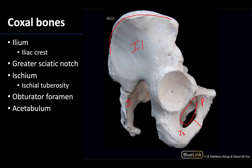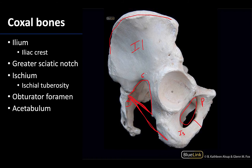Between the ischium and the ilium there is the greater sciatic notch. If you add in the ligaments running here, you would have one ligament from the sacrum to the ischial spine — that would be the sacrospinous ligament — and then from the sacrum to the ischial tuberosity, forming a greater sciatic foramen. This part of the bone is referred to as the greater sciatic notch.